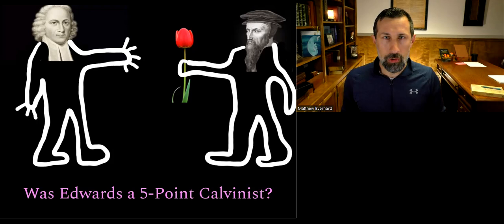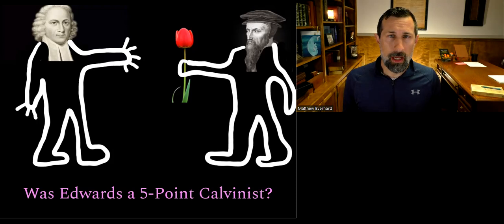Usually, if there's any point left off of the TULIP acronym, it's the point of limited atonement. Sometimes people describe themselves as a four-point Calvinist, sometimes as a five-point Calvinist. So what are the five points? Let's tick through them really quickly.